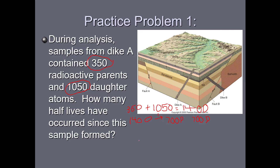We keep going: we take the 700 parents that remained after one half-life, and in the second half-life, half of 700 is 350 parents remaining, and 350 new daughters are made. Adding the daughters together: 700 from the first half-life plus 350 from the second equals 1050 daughters total. That matches our sample — 350 parents and 1050 daughters. So the answer: there have been two half-lives since the sample formed.